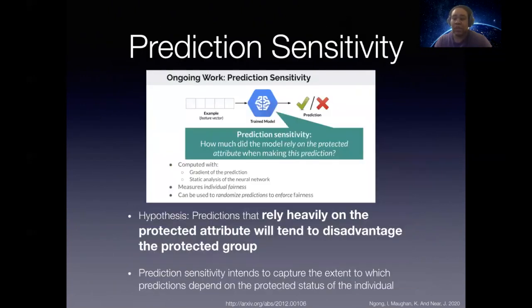And this is where prediction sensitivity comes in. Prediction sensitivity captures the extent to which predictions depend on the protected status of the individual. It doesn't attempt to improve predictions, but rather raises an alarm for bad ones. It draws upon differential privacy by drawing on the concept of function sensitivity used in differential privacy. By looking at a weight and computing a feature vector x, the partial derivative of the prediction with respect to one feature, we ask how much does a model rely on the protected attribute, which indicates membership in one group or another, by taking the prediction itself and looking at its gradient.